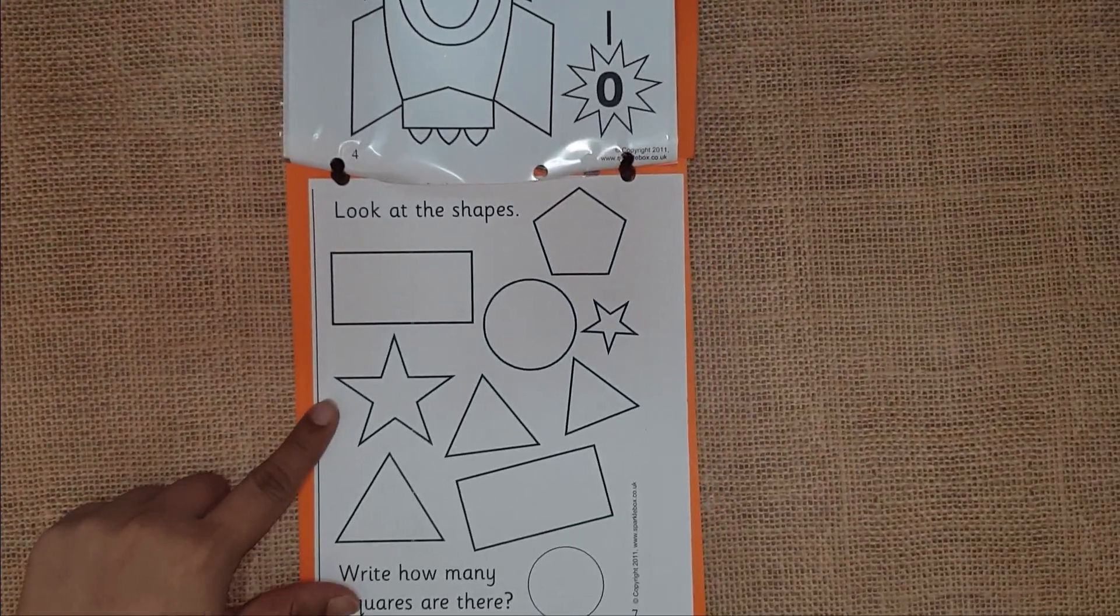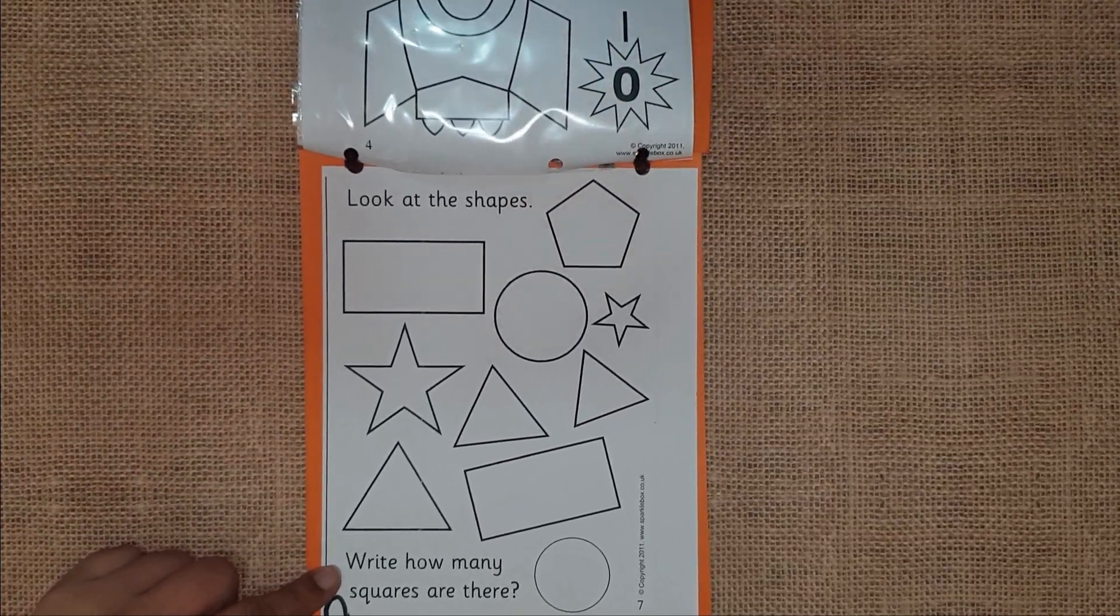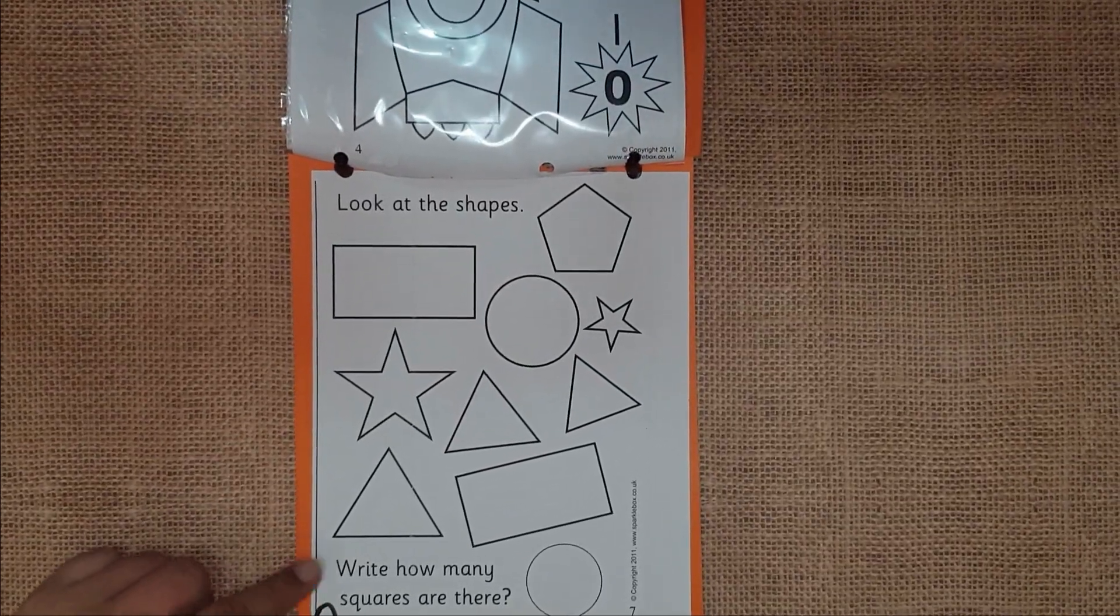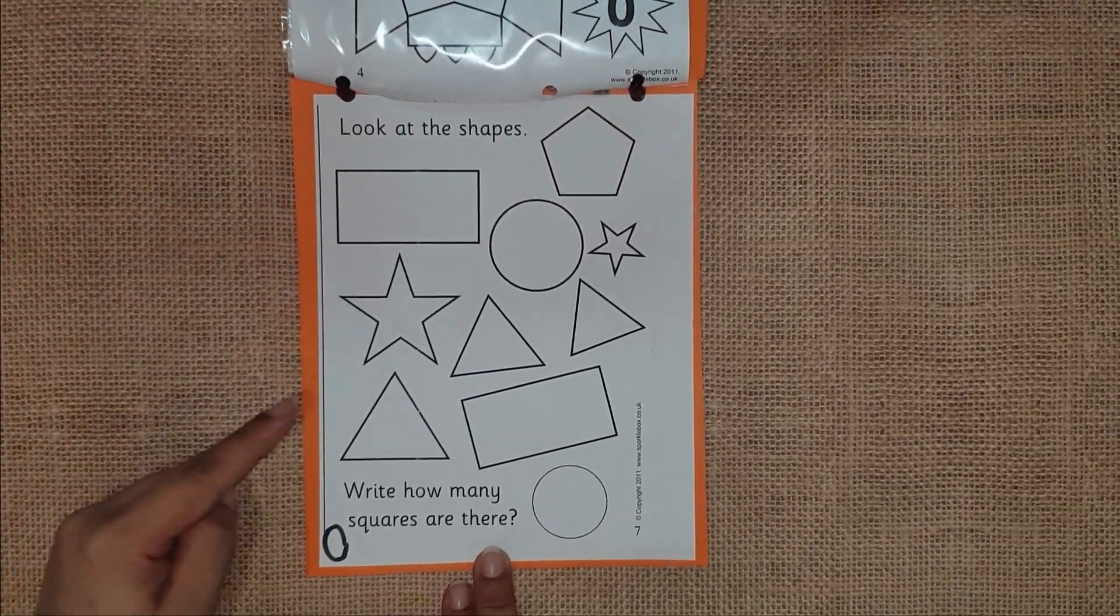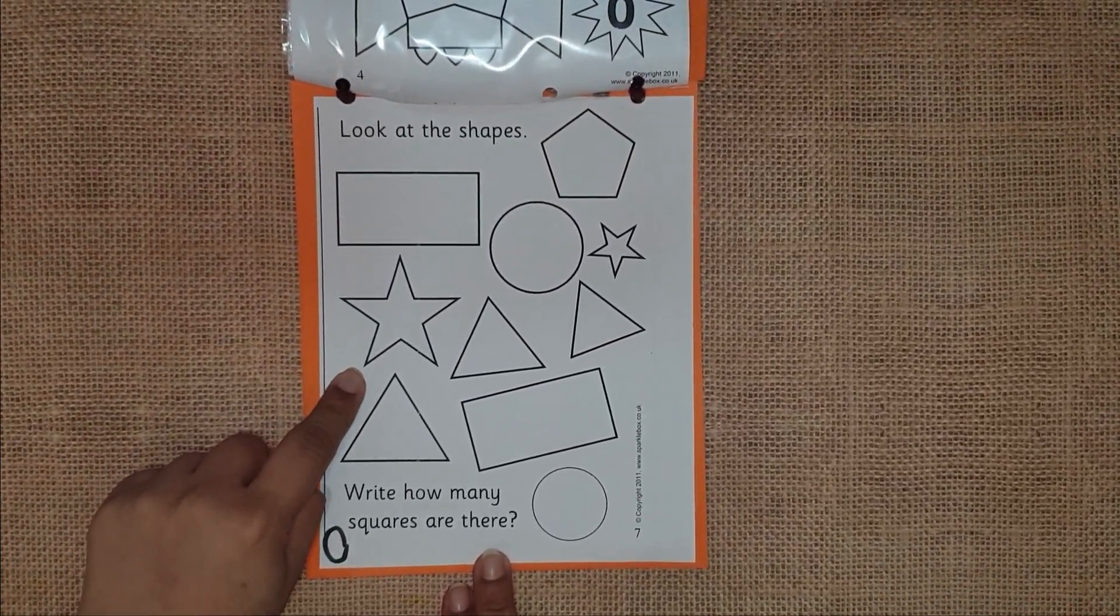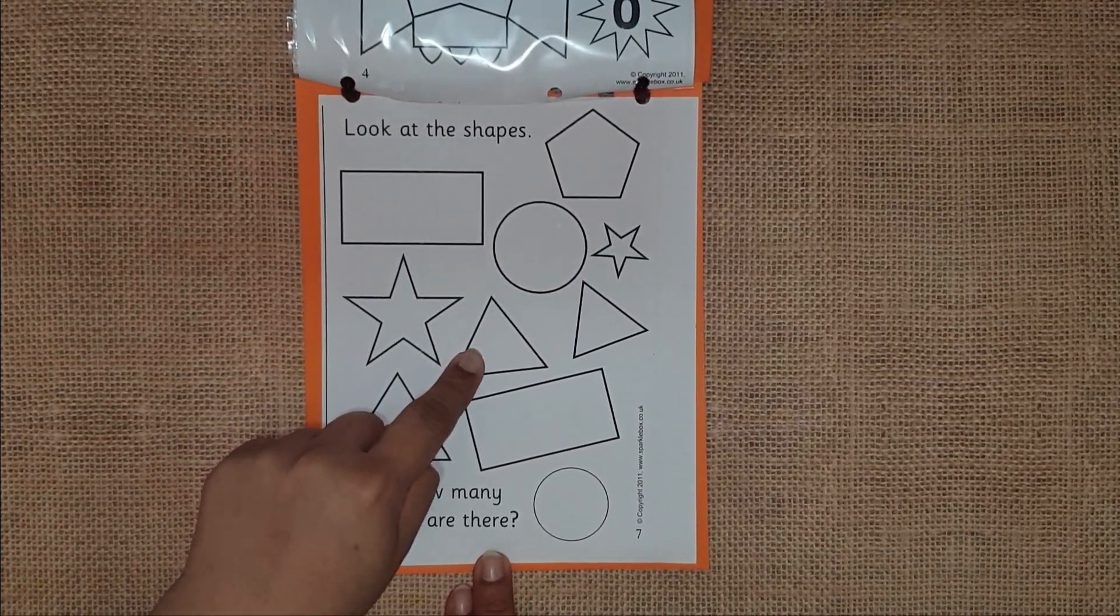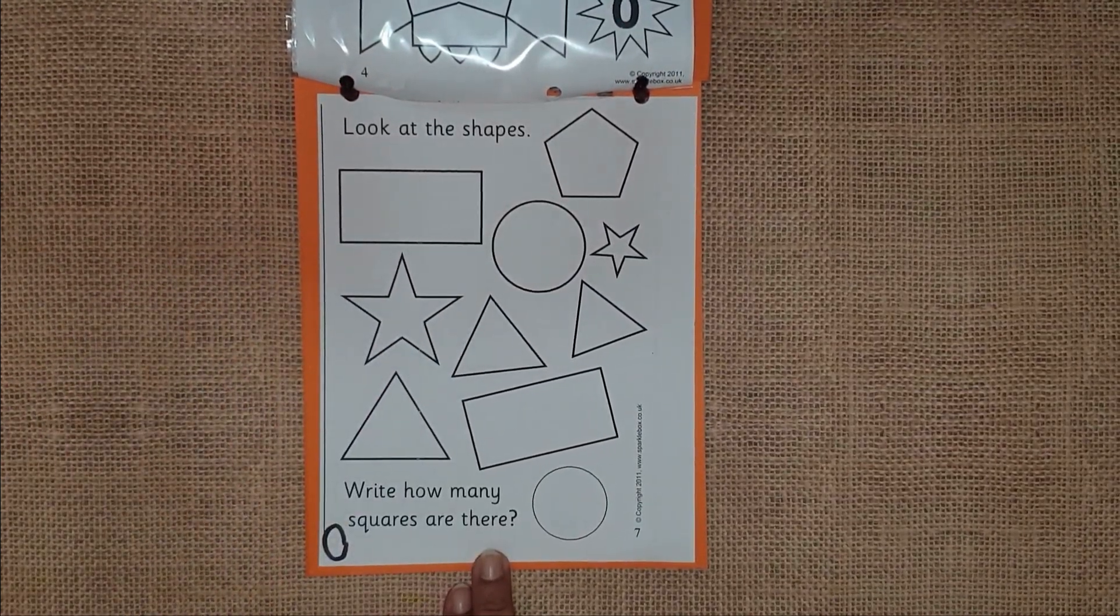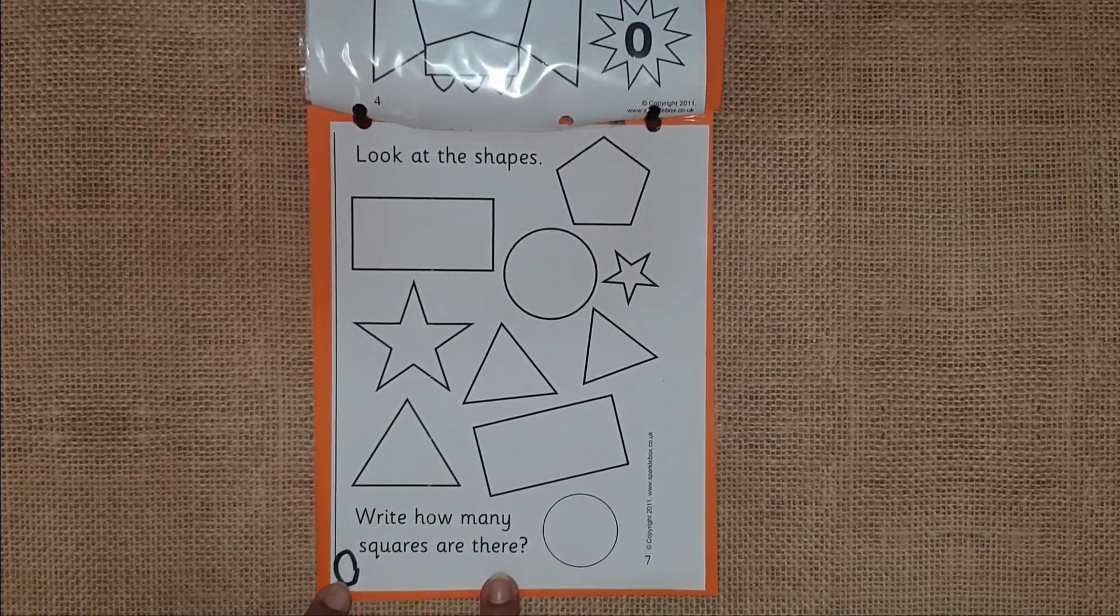Next, look at the shapes. Write how many squares are there. Is this square? No, it's not. Is this square? No, it's not. Is this square? No, it's not. I don't find any square shape over here. That means we have zero squares.